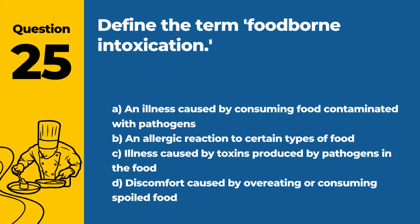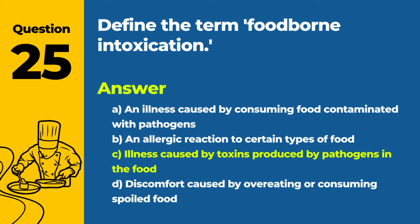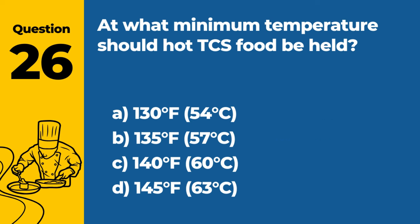Question 25: Define the term foodborne intoxication. A. An illness caused by consuming food contaminated with pathogens. B. An allergic reaction to certain types of food. C. Illness caused by toxins produced by pathogens in the food. D. Discomfort caused by overeating or consuming spoiled food. Answer: C. Illness caused by toxins produced by pathogens in the food. Foodborne intoxication is an illness caused by consuming toxins produced by pathogens in the food, as opposed to infection from the pathogens themselves.